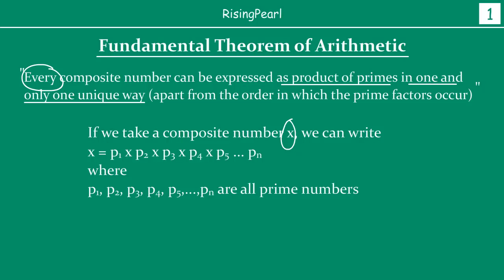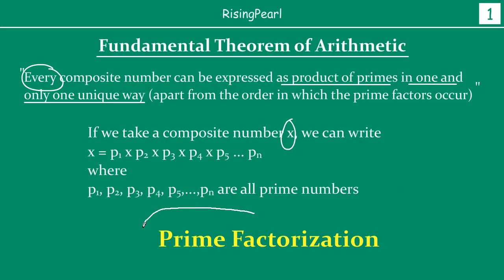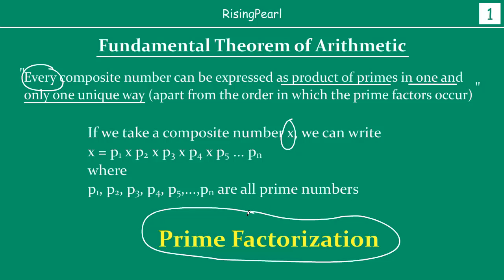Friends, if you recall, isn't this really what we have studied in our earlier classes as prime factorization? Yes, indeed. You take any composite number and you can break that composite number down as a product of its primes. And the Fundamental Theorem of Arithmetic states that there is one and only one unique way of doing that. So let's take some examples.